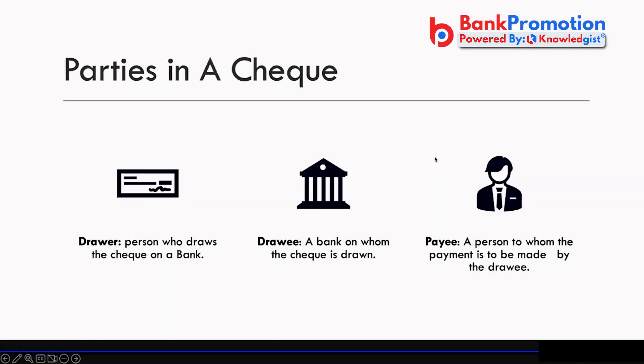The parties in a cheque are: the drawer — the person who draws the cheque; the drawee — the bank on whom the cheque is drawn; and the payee — the person to whom the payment is to be made.